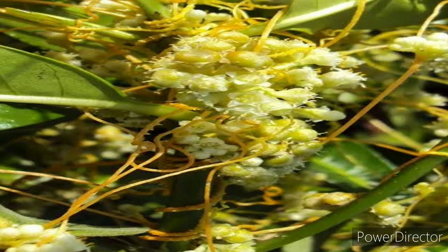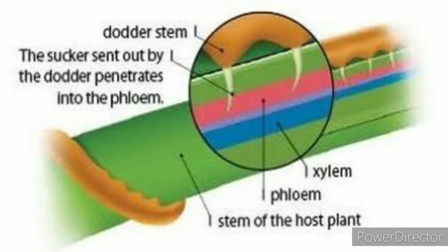Otherwise the seedling will die. During this time the seedling depends on its food reserve. Then it twines around the host plant and its haustoria penetrates the host plant. Water is drawn through the haustoria from the xylem of the host plant, and nutrients are drawn from the phloem of the host plant.